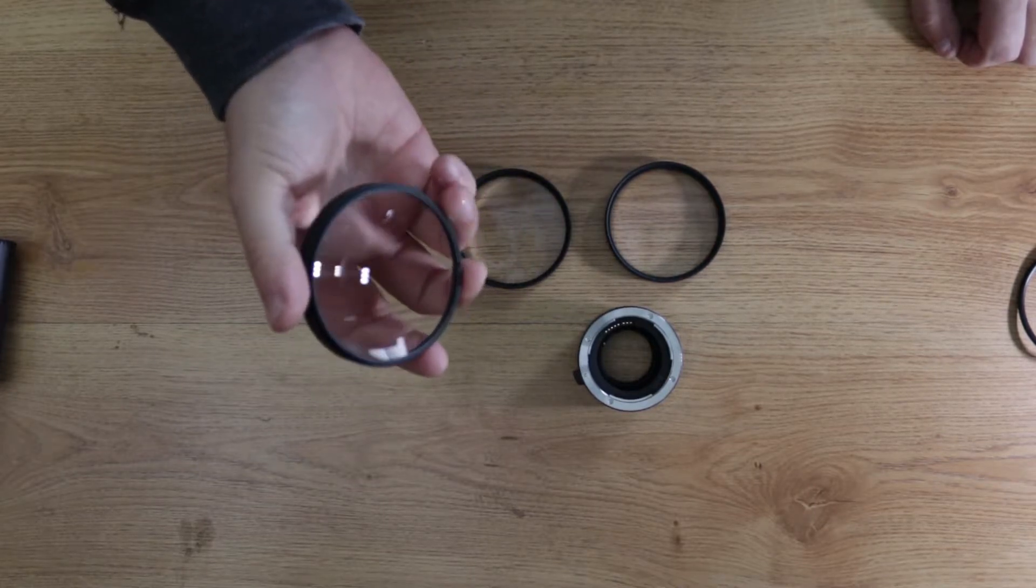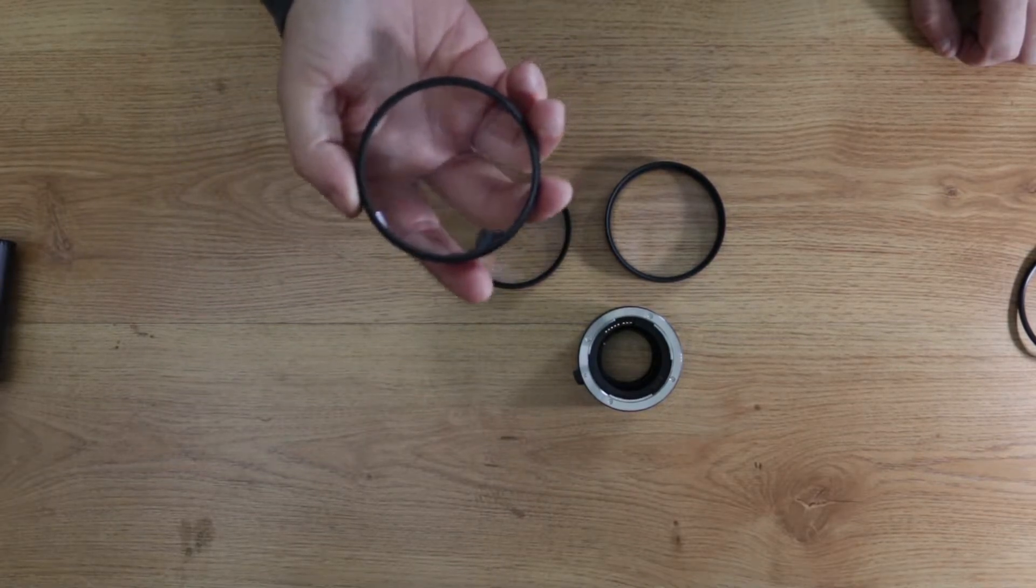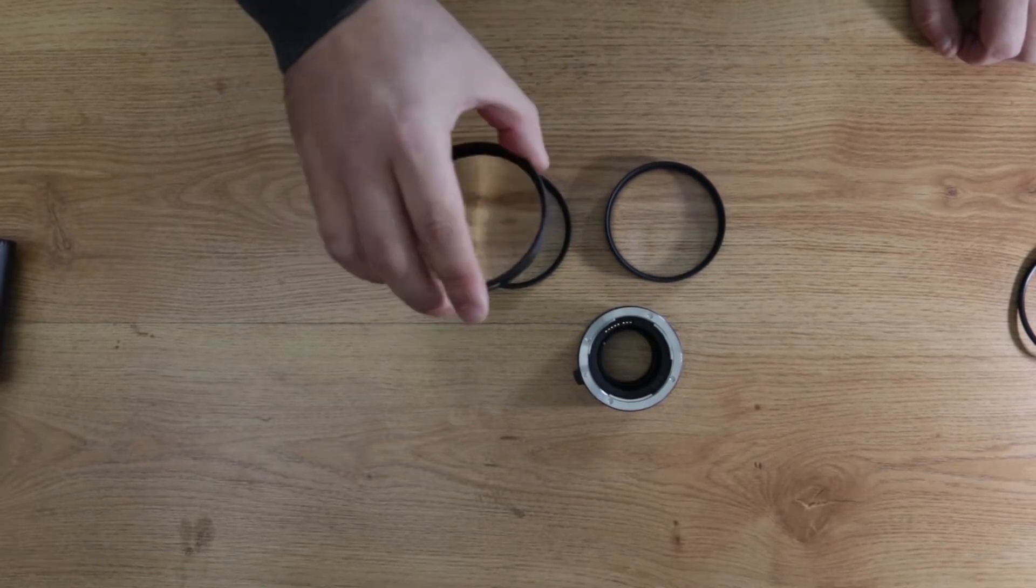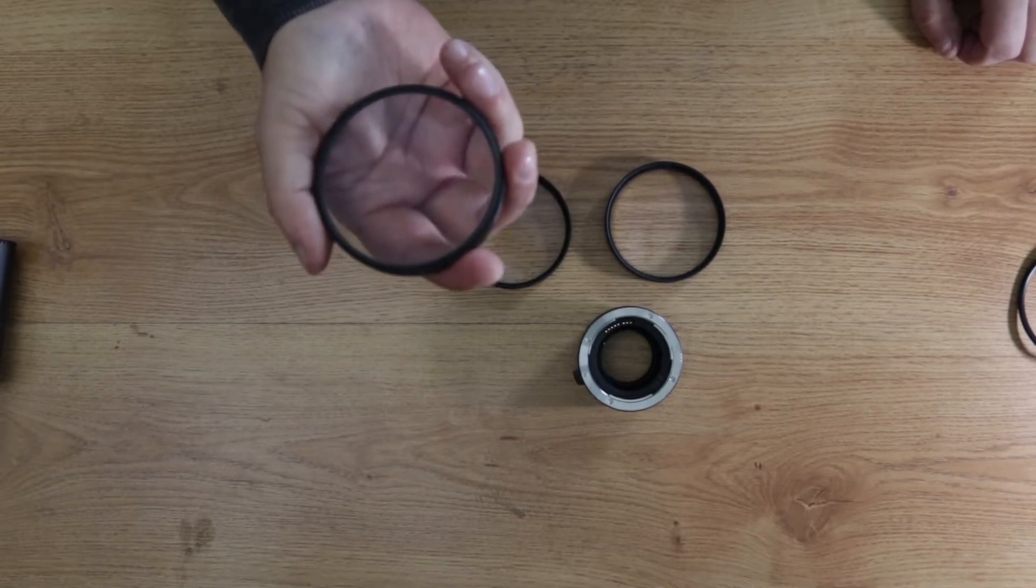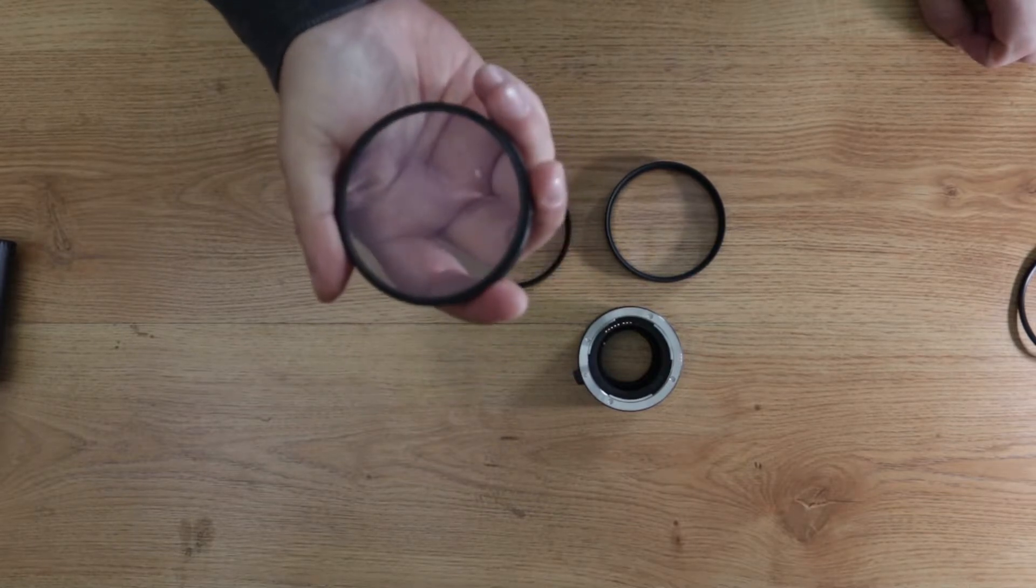They're basically just magnifying glasses, so you're gonna get some soft areas in your image, usually around the edges. If you're cropping in anyways, they're a great inexpensive way to get you nice and close to your subjects.